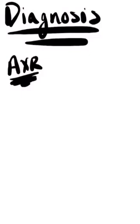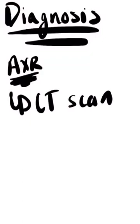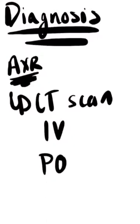Once you have confirmed there are dilated loops of bowel, the next step should be CT scan — preferably with IV contrast and PO contrast. The PO contrast is going to help you definitively find the transition point. You give the contrast, let the patient sit for an hour, and by the time the patient gets to the CT scan, the contrast is going to stop exactly where the obstruction is. It will also help you determine if it's a partial versus a complete obstruction.